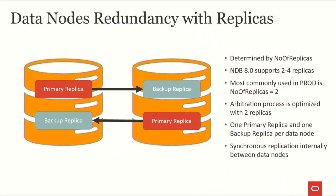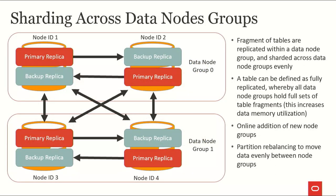Each data node has a primary replica and a backup replica that replicate each other. If two replicas are not enough, we can shard the data by adding more data nodes. The first two data nodes form data node group 0, and the next two form data node group 1. Data node group 0 and group 1 shard the data across them.